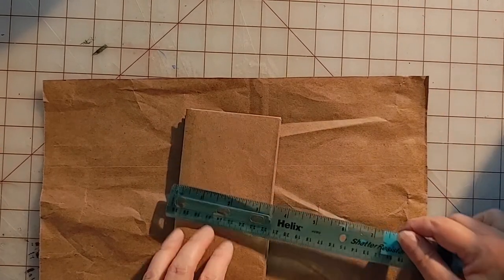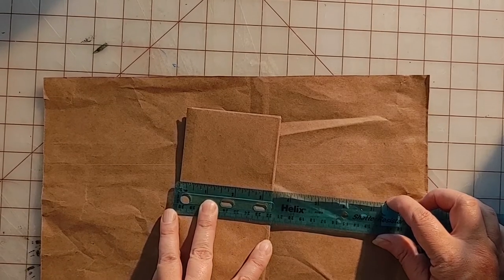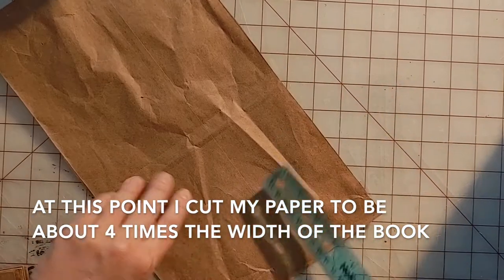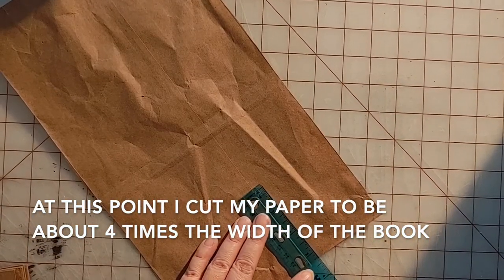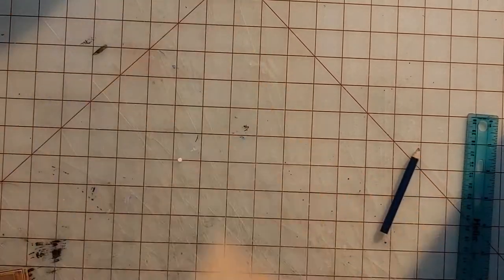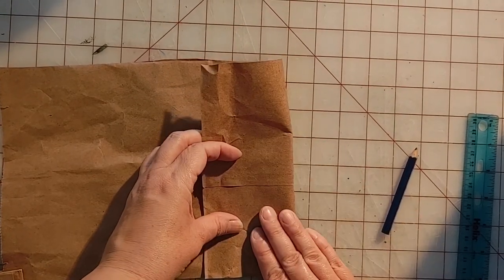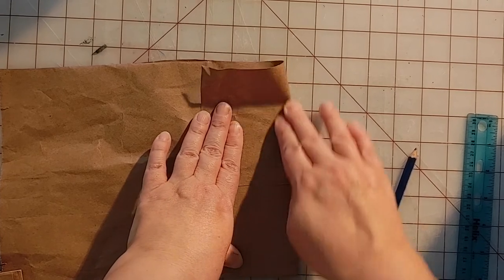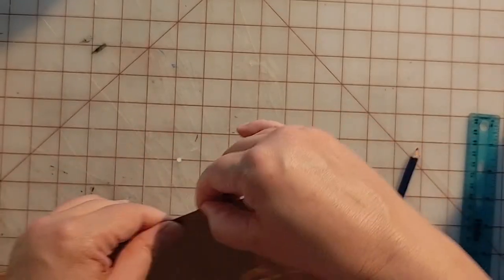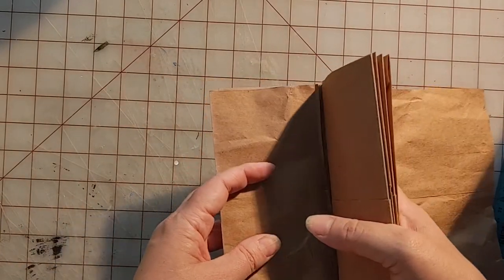So the next thing I'm going to do is measure how wide my book is. And mine is just a little over three and a quarter, let's say three and three eighths. And I'm going to measure that far in from my cover, from one of the long edges. And I'm going to fold my cover at that mark.